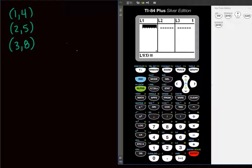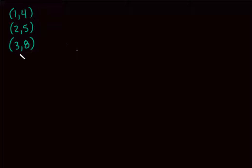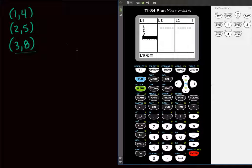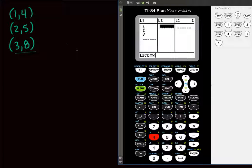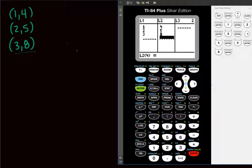In List 1, enter your X values: press 1, ENTER; 2, ENTER; 3, ENTER. Then arrow over to List 2 and enter your Y values: 4, ENTER; 5, ENTER; 8, ENTER. So List 1 has your X values and List 2 has your Y values.